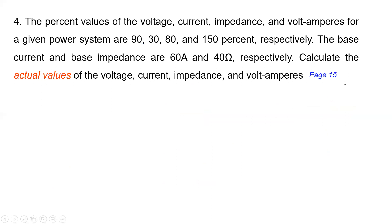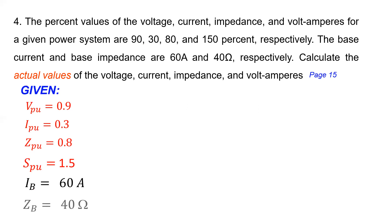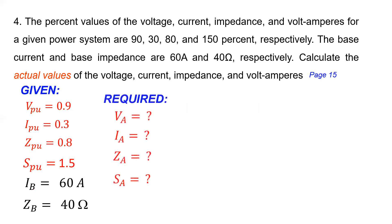Problem number four: the percent values of voltage, current, impedance, and volt-amperes for a given power system are 90%, 30%, 80%, and 150% respectively. The base current and base impedance are 60 amperes and 40 ohms respectively. Calculate the actual values of voltage, current, impedance, and volt-amperes. Converting the percentages to decimals: per unit voltage = 0.9, per unit current = 0.3, per unit impedance = 0.8, per unit VA = 1.5.